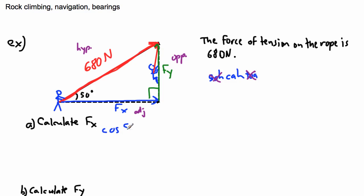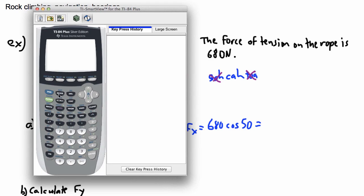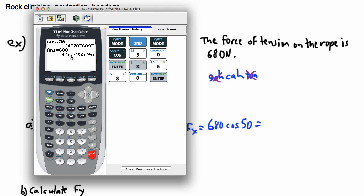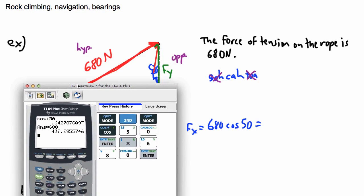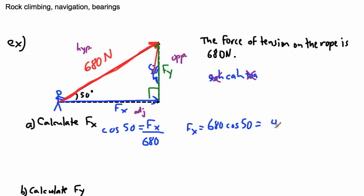So I can say cosine of 50 degrees equals adjacent over hypotenuse. In this case, the adjacent is the thing I'm looking for — fx — over hypotenuse, which is 680. Therefore, fx equals 680 times cos(50°). I'll bring out my calculator, making sure I'm in degree mode — yes, degree mode. So cosine of 50, then multiply that by 680, and I get an answer of 437 newtons. Rounding to the appropriate significant figures, that's 440 newtons.